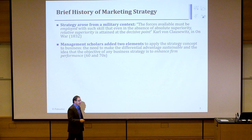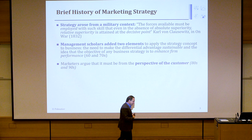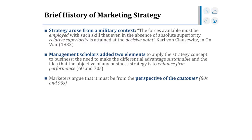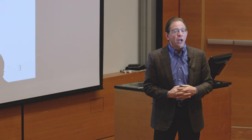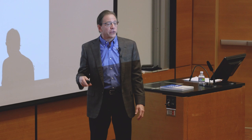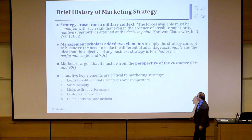Then in the 80s and 90s, marketing added to the definition. The big addition was to think of marketing strategy from the customer's perspective — not just the firm or the industry, but down to the unit of analysis being the customer, because that's really where the battle occurs: winning customer by customer. Putting these five elements together gives us five key elements critical for marketing strategy.